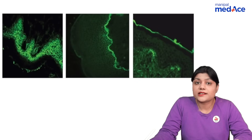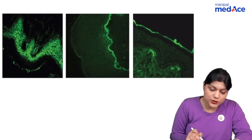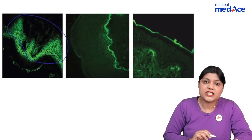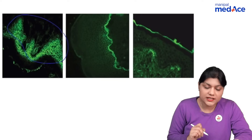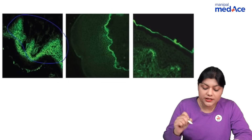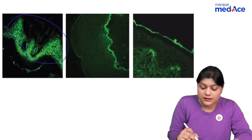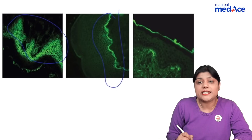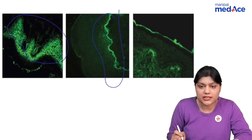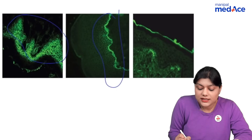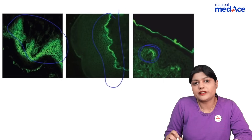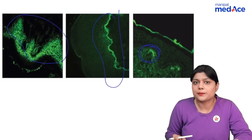Characteristic DIF findings: intraepidermal IgG deposition in pemphigus vulgaris leading to a fish net pattern. In bullous pemphigoid there is IgG deposition, and in linear IgA disease there is IgA deposition at the basement membrane zone. In dermatitis herpetiformis there is papillary tip deposition of IgA.